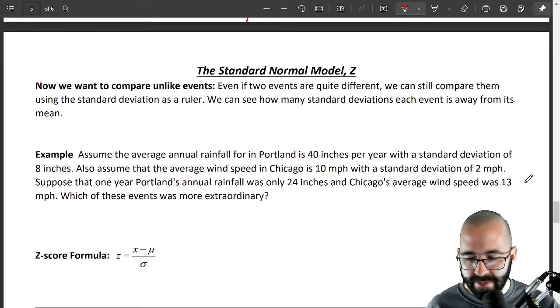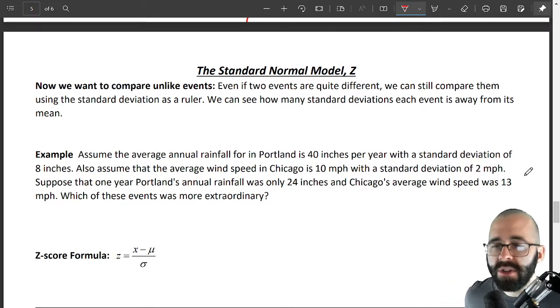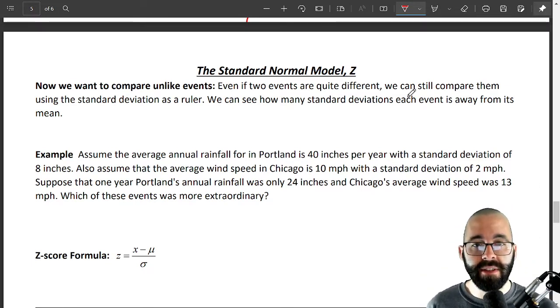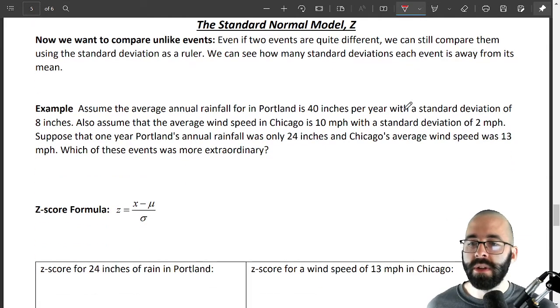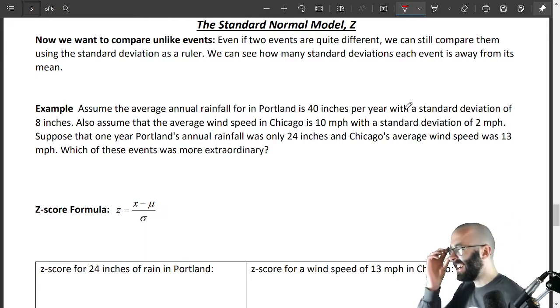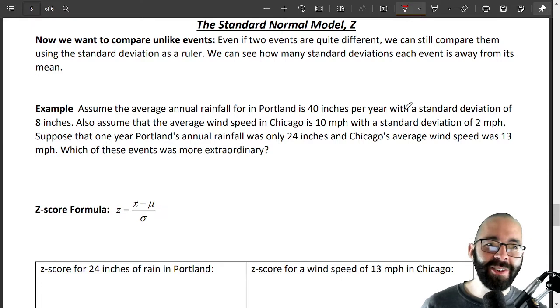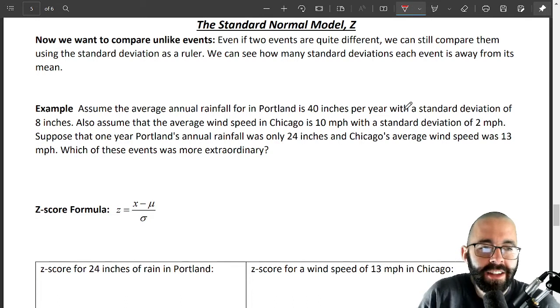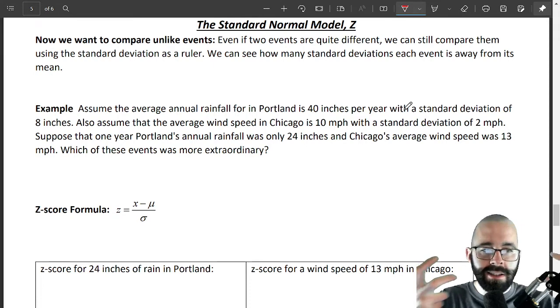Anyway, so here we are, standard normal model. So it's also useful when we're comparing different events. Like maybe in the next example we're comparing rainfall in two different cities, or rainfall and wind speed is actually the next example.